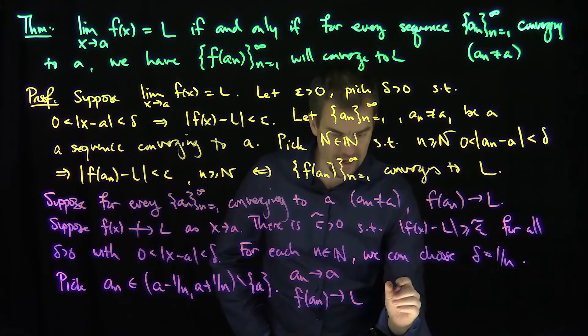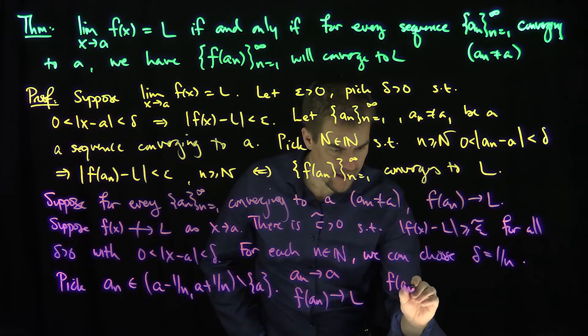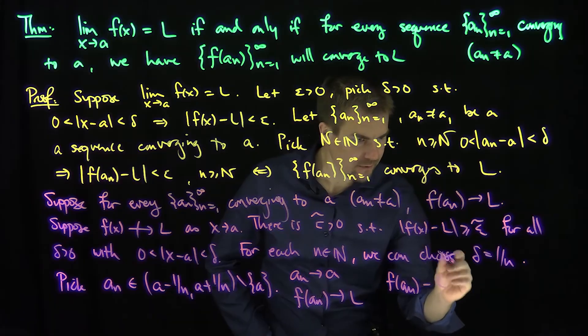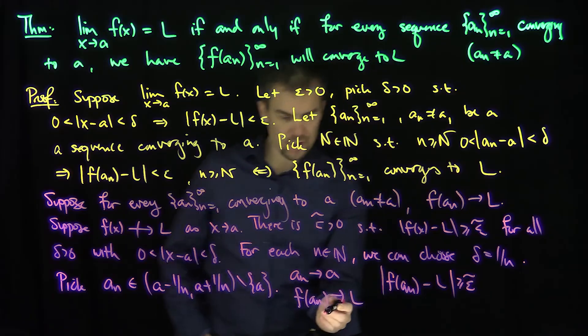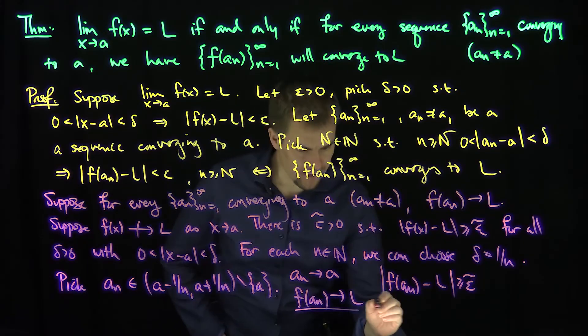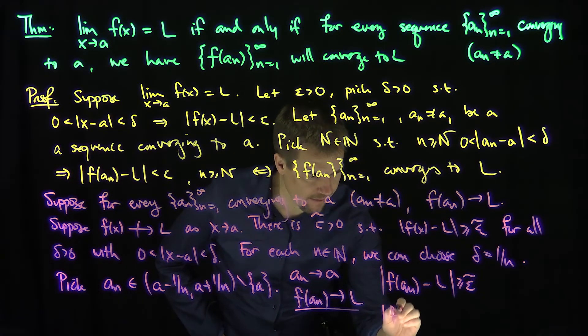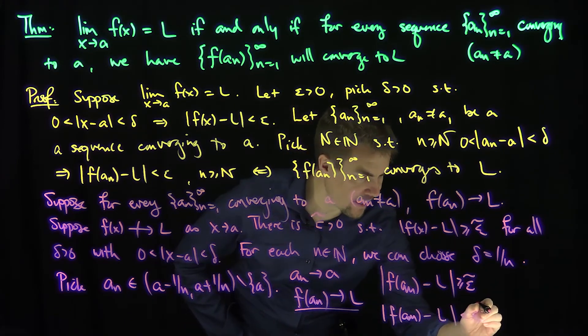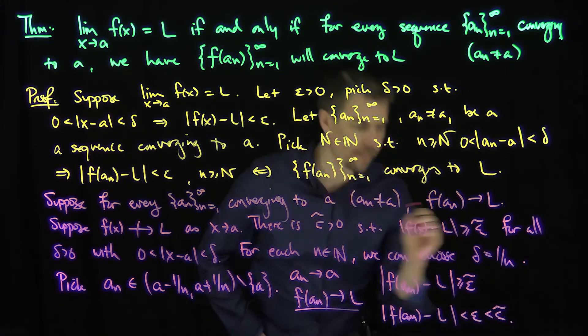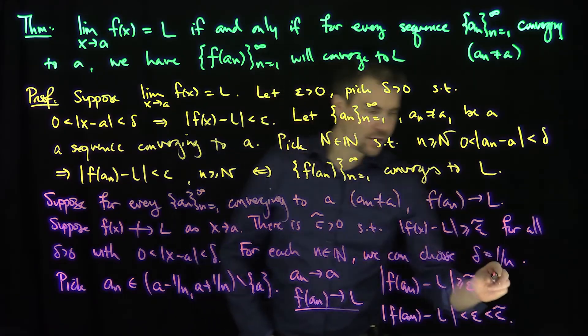But what do we know? We know that |f(aₙ) - L| for this particular sequence will be bigger than or equal to epsilon tilde, and that's a contradiction because this will tell me that there isn't N large enough such that |f(aₙ) - L| can be made less than epsilon, which would be less than epsilon tilde if I choose epsilon appropriately, which is a contradiction to this fact.